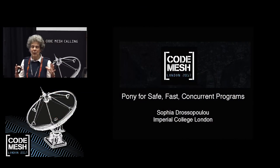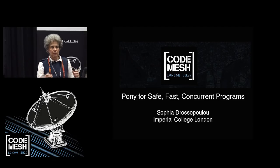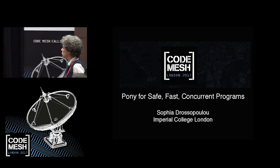It all started at Imperial College in 2011, when Sylvain came to Imperial to do a PhD. Sylvain doesn't have a degree in computer science, but I hope that he will soon have a PhD. He came with a vision about what should be a good way to program fast, reliable, concurrent programs, and he has convinced many people to follow that vision, and many people have contributed to it.